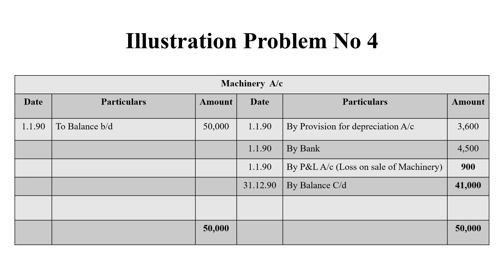First, we are preparing the machinery account. On 1-1-1990, the opening balance is Rs. 50,000 on the debit side. On the credit side, provision for depreciation account is Rs. 3,600 — that is 900 into 4 — total consolidated depreciation. We have sold the machinery for 4,500 rupees, so by bank 4,500 rupees is on the credit side. We also record a loss on sale of machinery of Rs. 900 on the debit side. The balancing figure on the credit side is Rs. 41,000 on 31-12-1990, and the grand total on both sides is 50,000 rupees.